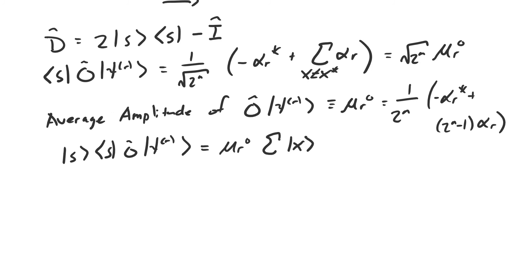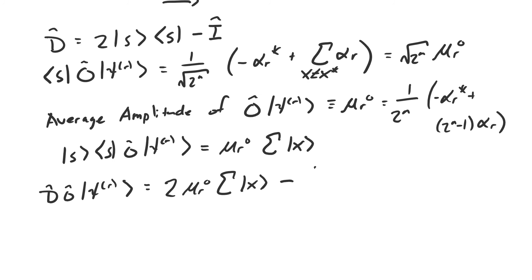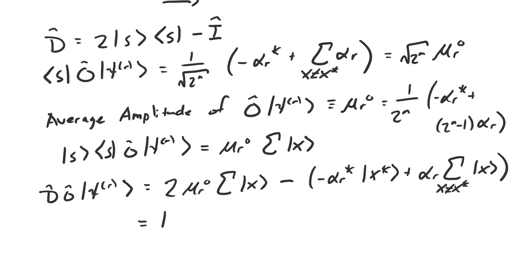The √(2^n) cancels out because the coefficient in front of all basis vectors in the uniform superposition is 1 over √(2^n). Finally, the result of applying the subroutine to ψ_r is two times μ_r times the sum of all basis vectors minus O acting on ψ_r, which is negative α_r* times x-star plus α_r times the sum of all other basis vectors — giving us ψ_{r+1}, the state after applying the subroutine r+1 times.